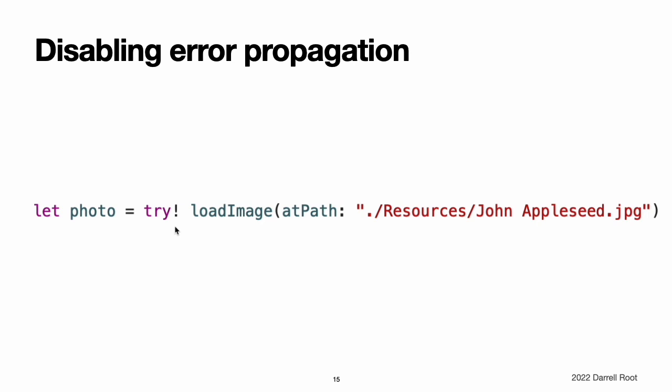For example, this code uses a loadImage(atPath:) function, which loads the image resource at a given path or throws an error if the image cannot be loaded. In this case, because the image is shipped with the application, no error will be thrown at runtime, so it is appropriate to disable error propagation.